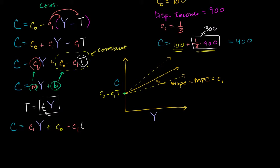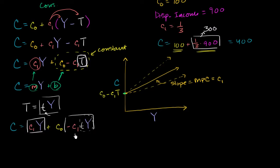So I just took this — instead of writing uppercase T, I wrote lowercase t times aggregate income. They should be the same thing. But now we've expressed T as a function of aggregate income, and we can merge both of these terms — they're both something times aggregate income — so we can combine those two terms.